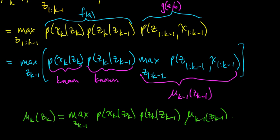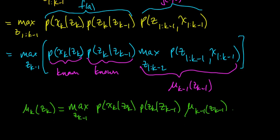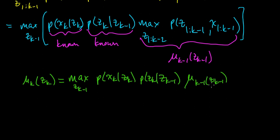Let's think about for what k's this holds. When k is 1, then we'd have z_0, which is a little strange. But for all k greater than 1, this is fine. So let's restrict this recursion to k from 2 to n.